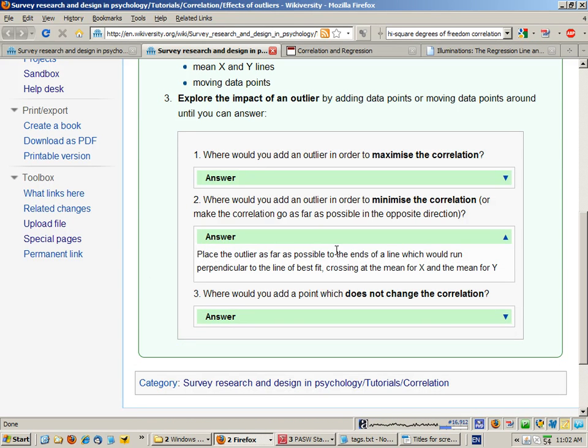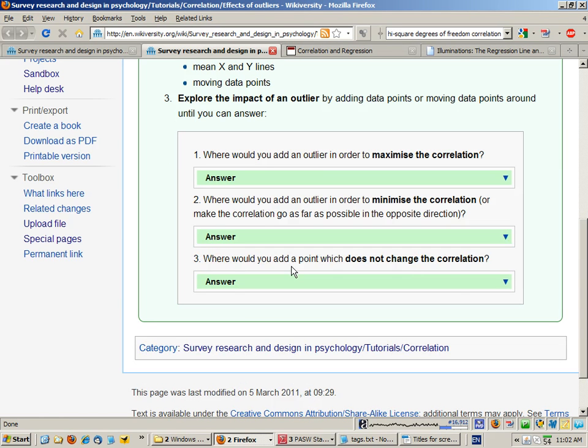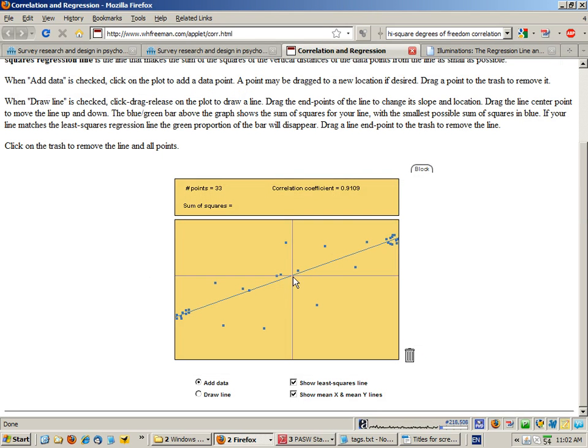And finally, where would we add a point which does not change the correlation? If we add data points that are the mean of X and the mean of Y, they will sit on the line of best fit and they will have virtually no effect.